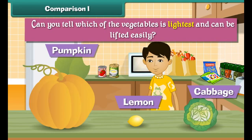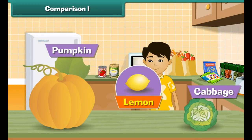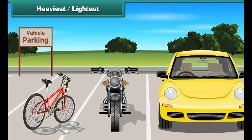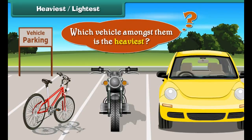Sandy has a pumpkin, a cabbage, and a lemon. Can you tell which of the vegetables is lightest and can be lifted easily? Lemon is lighter than the other two vegetables. He can easily lift a lemon.